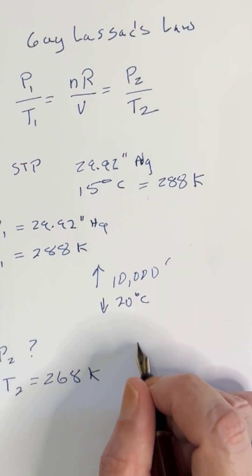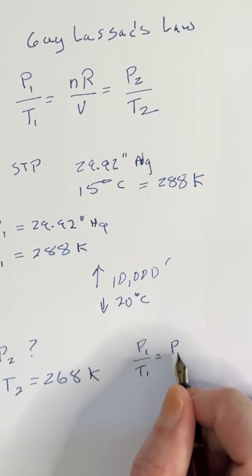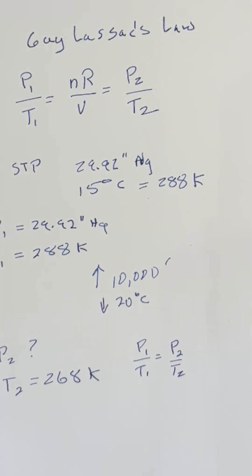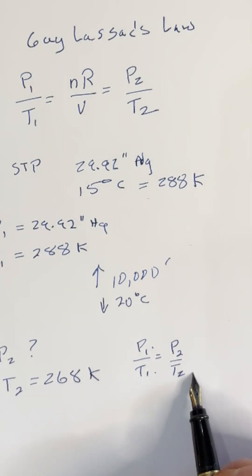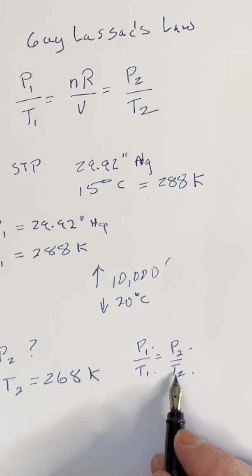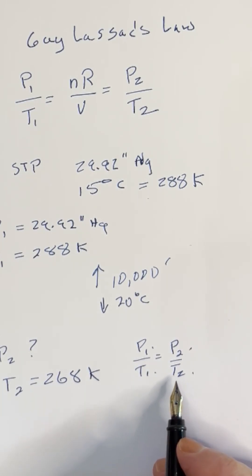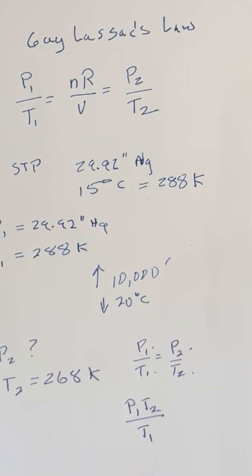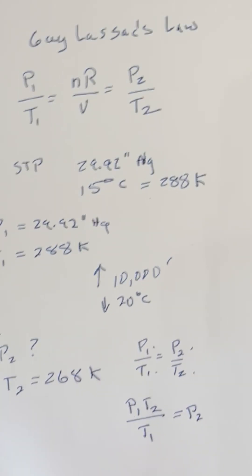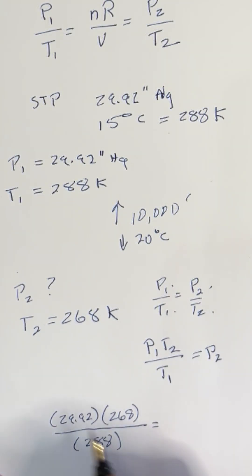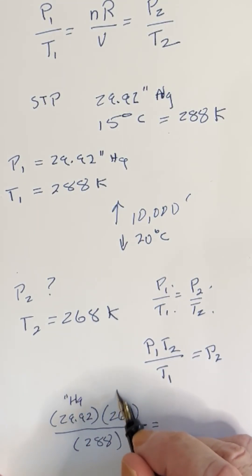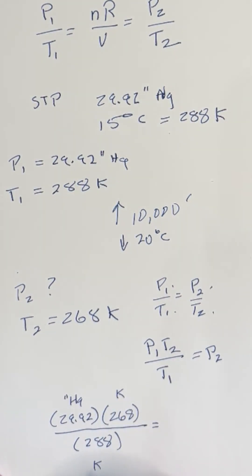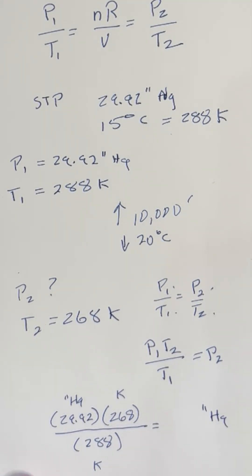Let's go ahead and do the math. The formula is P1 over T1 equals P2 over T2. We have P1, T1, and T2, and we want to solve for P2. So all we have to do is multiply both sides by T2 — that drops this out and we end up with P1 times T2 over T1, which equals P2. Putting in our values — 29.92 inches of mercury, 268 Kelvin, and 288 Kelvin — the units drop out and our answer will be in inches of mercury: 27.84 inches of mercury.